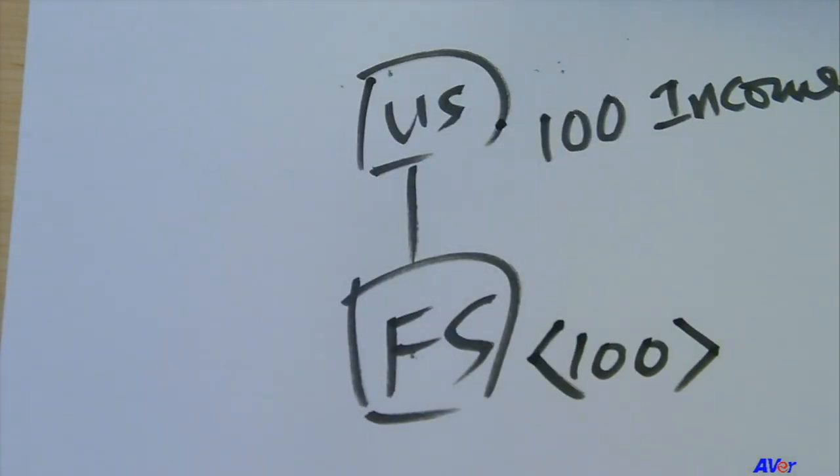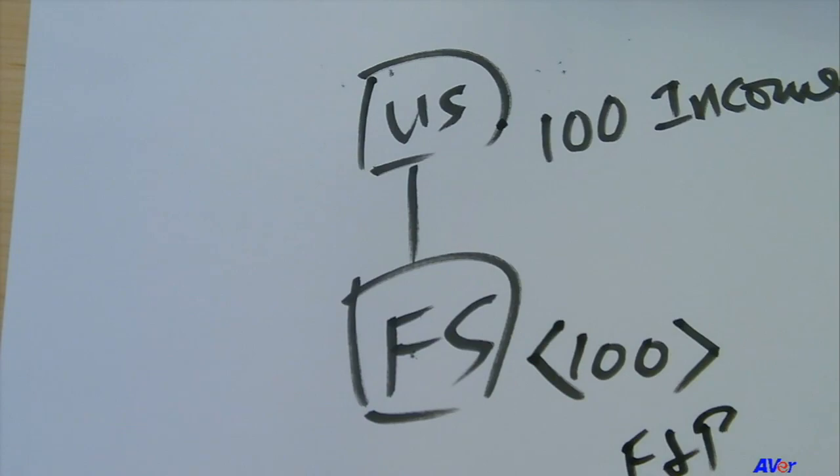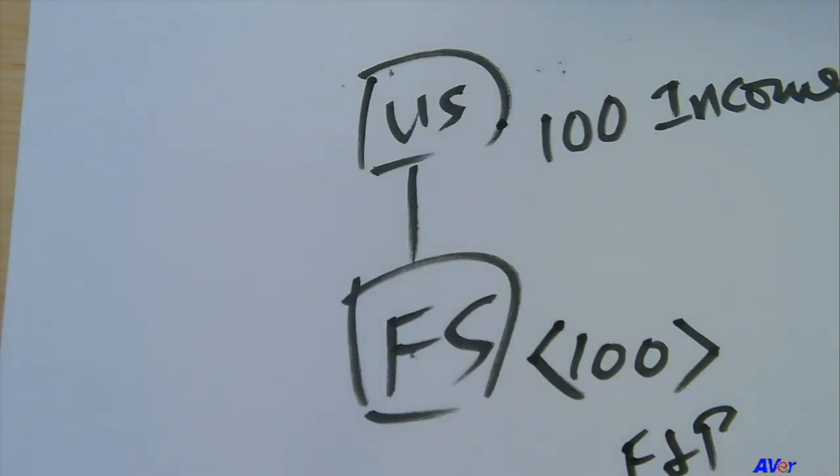If we're talking about a few years ago, maybe that just reduces the earnings and profits of the foreign subsidiary. Earnings and profits, of course, is a U.S. concept to determine how distribution with respect to shares will be treated under Section 301.